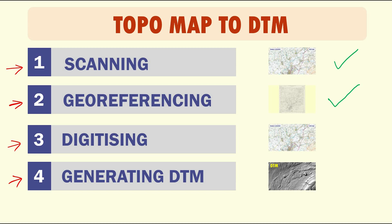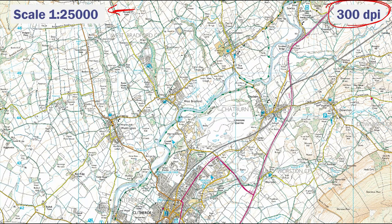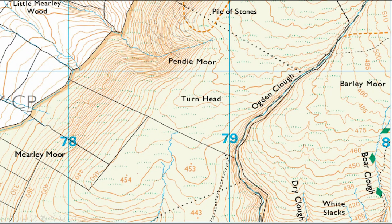The third stage is the most important one for the accuracy of your final digital terrain model — this stage is digitizing. You need to digitize the contour lines on your topographic map. With any topographic map there are contour lines with their elevations. Let's zoom in to see them better — as you can see here, there are a lot of contour lines throughout the map.